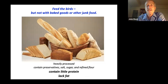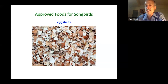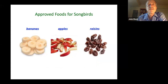Angel wing deformity is the consequence of a bird that's eaten too much processed baked goods. Approved foods for songbirds include eggshells — not only for females that will be laying eggs so they can use the calcium, but also for roughage in their gizzard to help them digest their food. Eggshells can serve that purpose. Bananas, apples, and raisins are foods that songbirds can eat. Some more foods include hard cheese, peas, corn, oats, and squash seeds. I've been feeding squash seeds to both birds and squirrels over the winter.